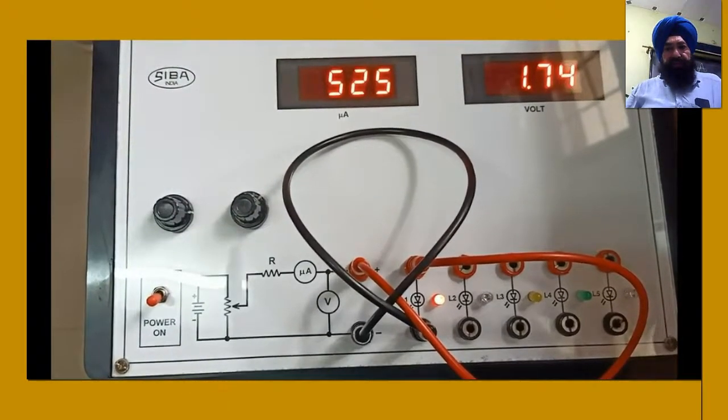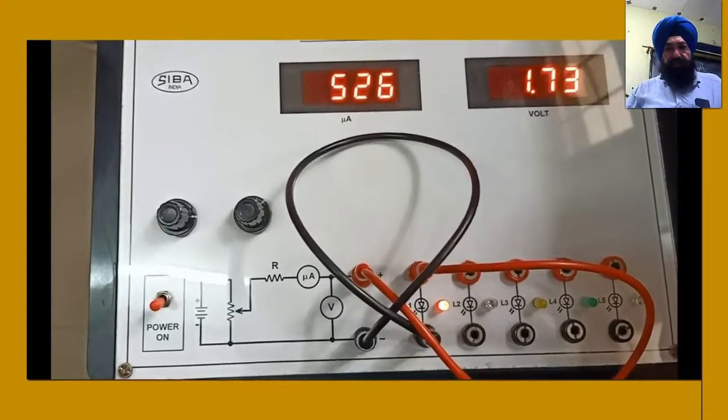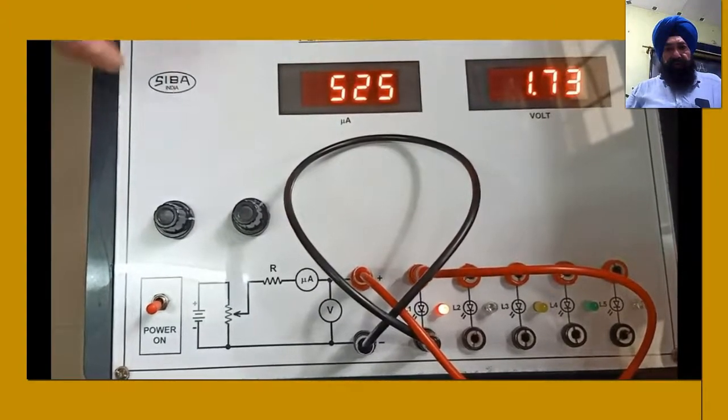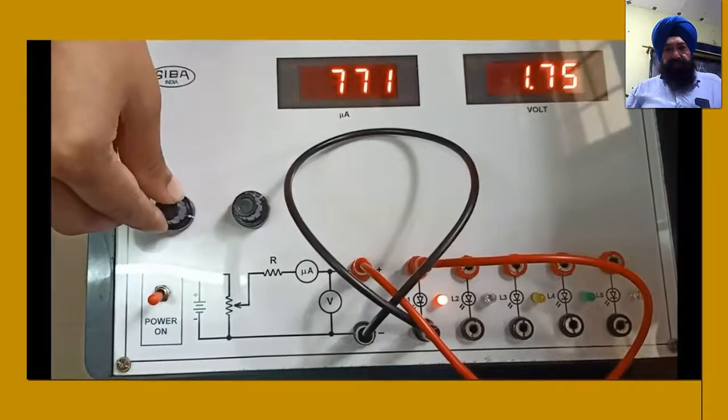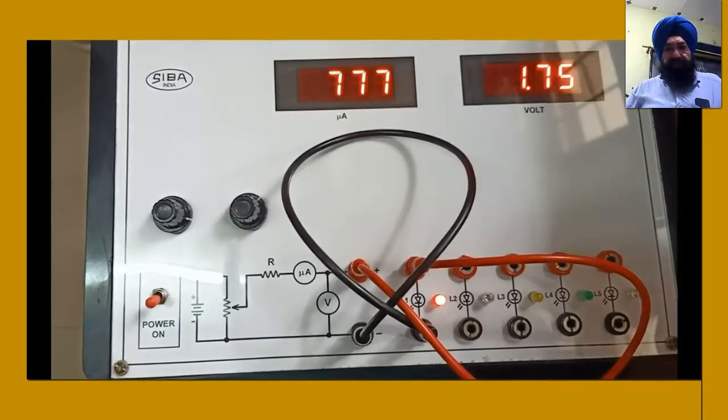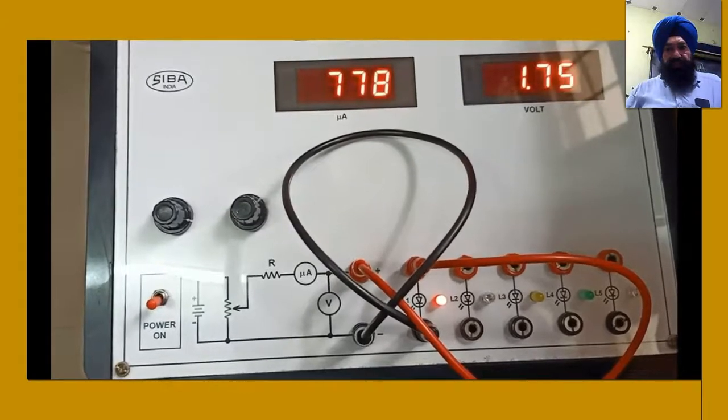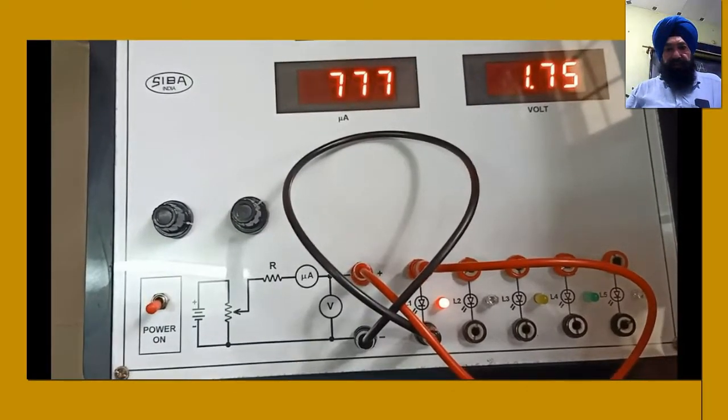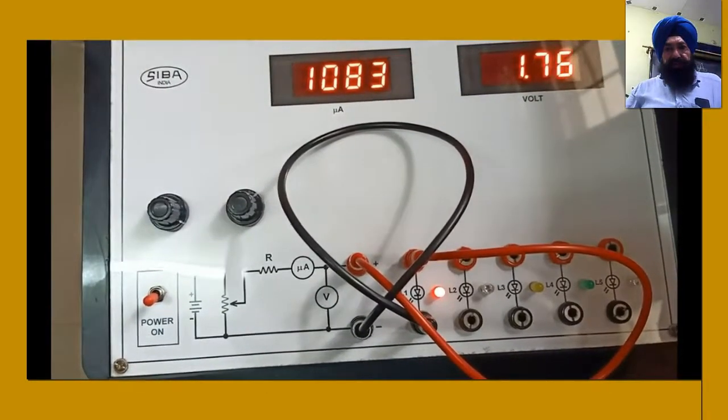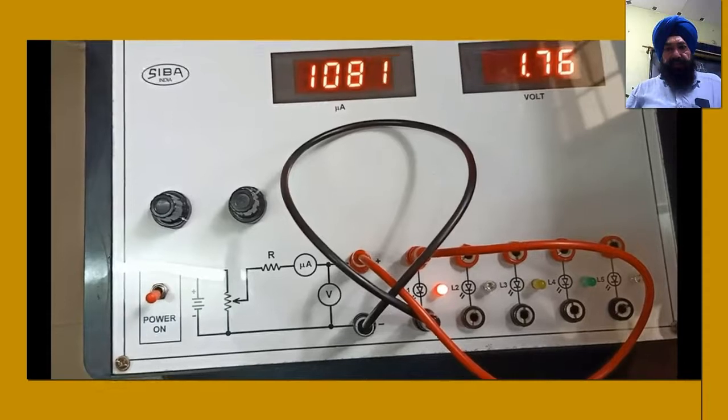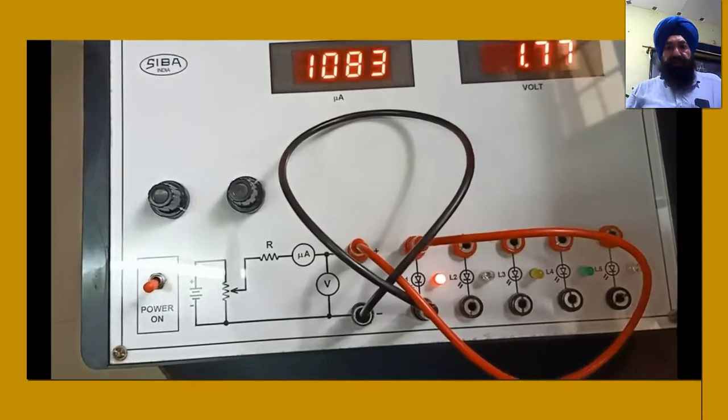The voltage is 1.72, current is 359 microampere. The voltage is 1.74, current is 528 microampere. The voltage is 1.75, current is 778 microampere. Voltage is 1.77, current is 1082 microampere.